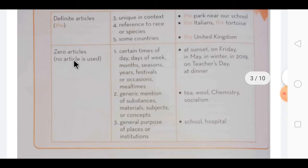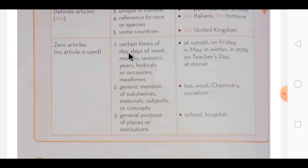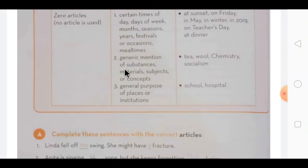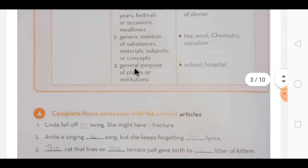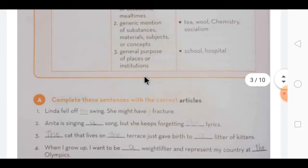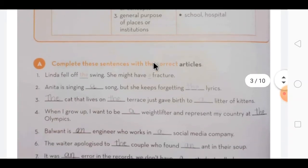Then zero articles - when we don't use articles. Certain times of day, days of week, months, seasons, years, festivals or occasions, or meal times, we don't use articles. Then next, generic mention of substances, materials, subjects or concepts. That time we don't use any article. And the third point is general purpose of places or institutions. We don't use the article.